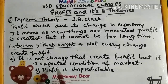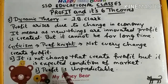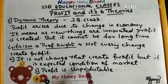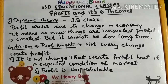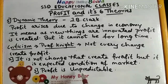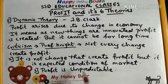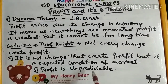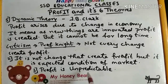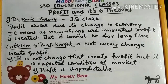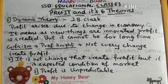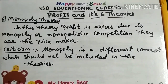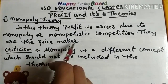Professor Knight criticized the Dynamic Theory, saying not every change creates profit. Sometimes we make changes but cannot earn profit and face losses. Profit arises when a firm meets the market's expected conditions — when a firm delivers what customers demand, it earns profit. Profit can also arise due to monopoly or monopolistic competition.